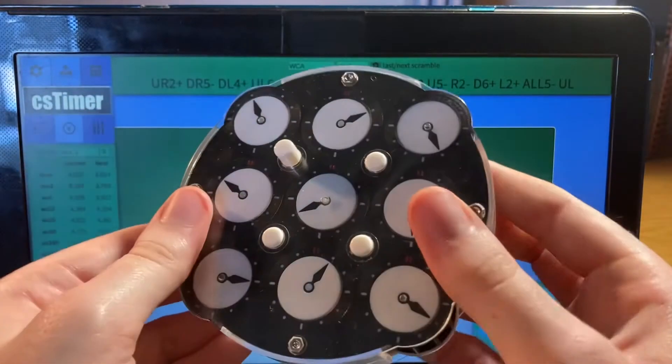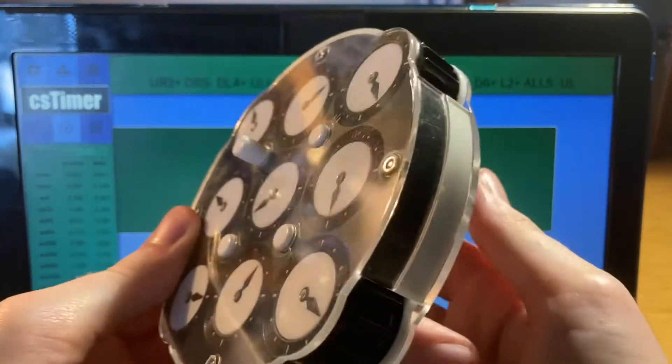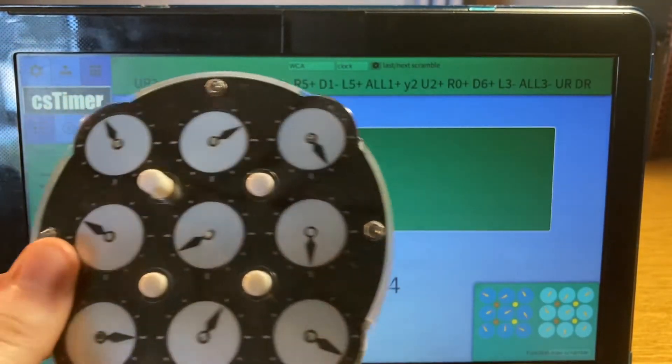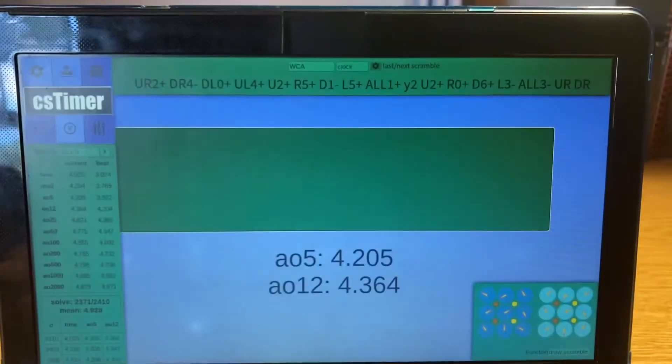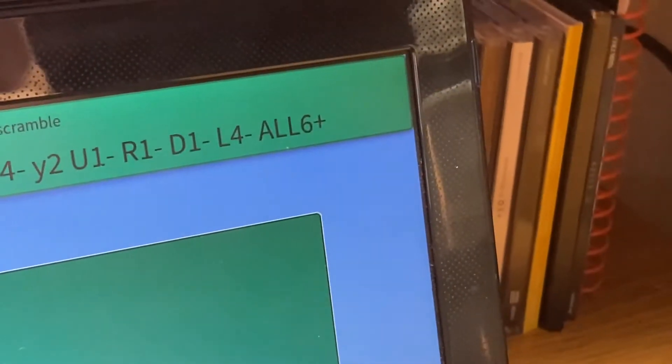You can see this scramble has UL, which means just the top left pin is up. If there was a scramble like this, that would mean both right pins are up. If there's no letters after a scramble, that means none of the pins are up on that face and they're all up on the opposite face.